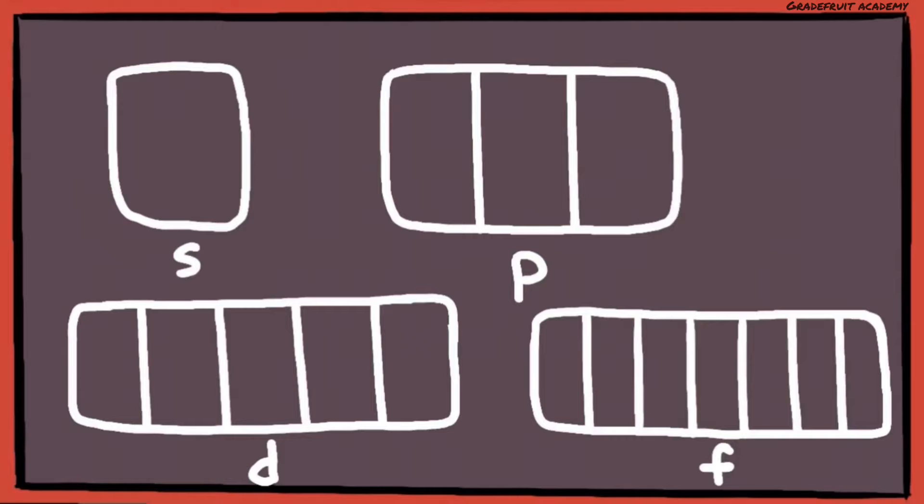The S subshell can contain up to only 1 orbital, P can contain 3 orbitals, D can contain 5 orbitals, and the F subshell can contain up to 7 orbitals. So you can literally imagine them as containers of different sizes.